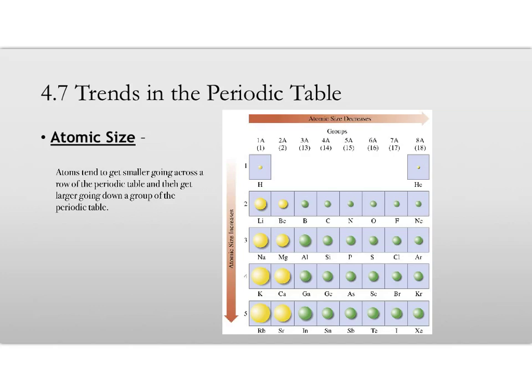First one here is atomic size, aka how big is the atom? What is the radius of the atom? And you can see with this picture here that the atoms tend to get smaller as you go left to right on the periodic table.